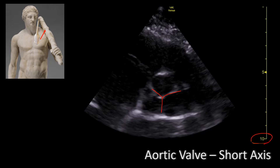Let's talk about the cusps of the aortic valve. The aortic valve cusp that is closer to the interatrial septum is going to be the non-coronary cusp. The cusp that is closer to the right ventricle is going to be the right coronary cusp. And the third cusp that's left is going to be the left coronary cusp.